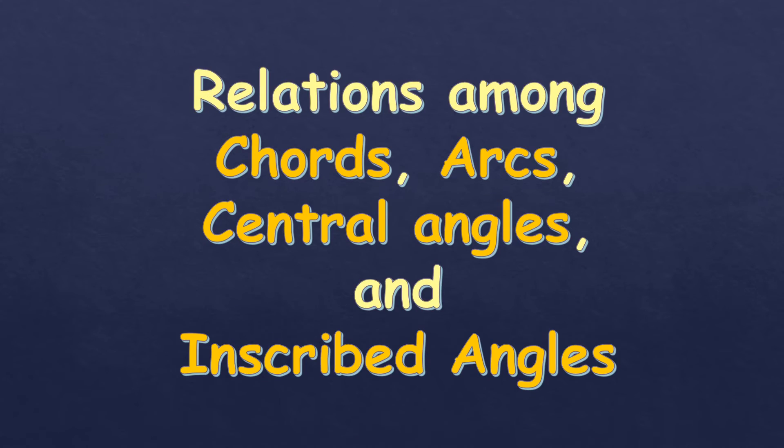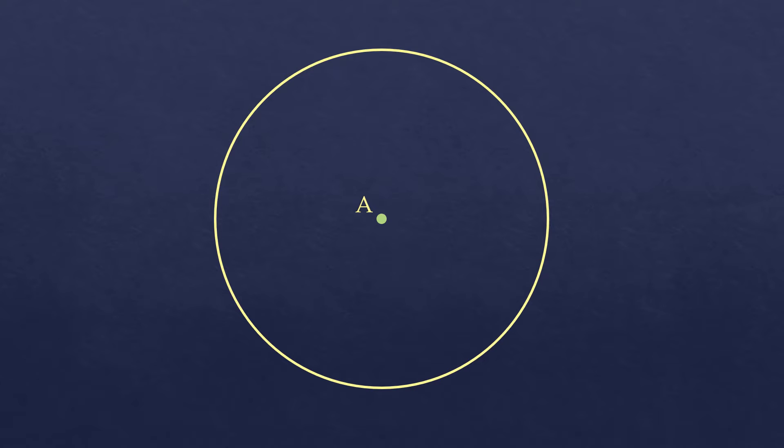In this video, I'm going to talk about relations among chords, arcs, central angles, and inscribed angles. For example, we have this circle with a center point A. We name the circle according to the center — if the center is point A, then we name this circle, circle A.